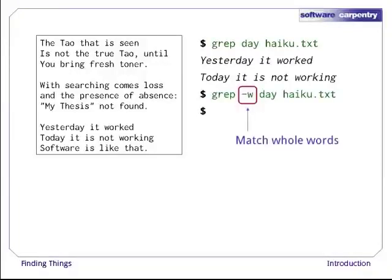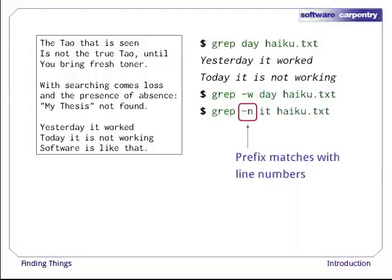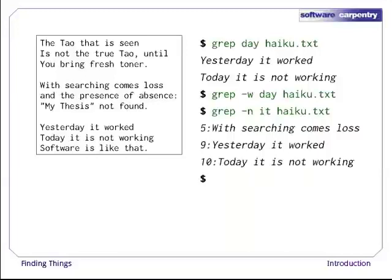If we give grep the -w flag, it restricts matches to word boundaries, so that only lines with the word day will be printed, not lines with today or daytime. In this case, there aren't any, so grep's output is empty. Another useful option is -n, which numbers the lines that match. Here, we can see that lines 5, 9, and 10 in the file contain the word it, or a word that contains it.